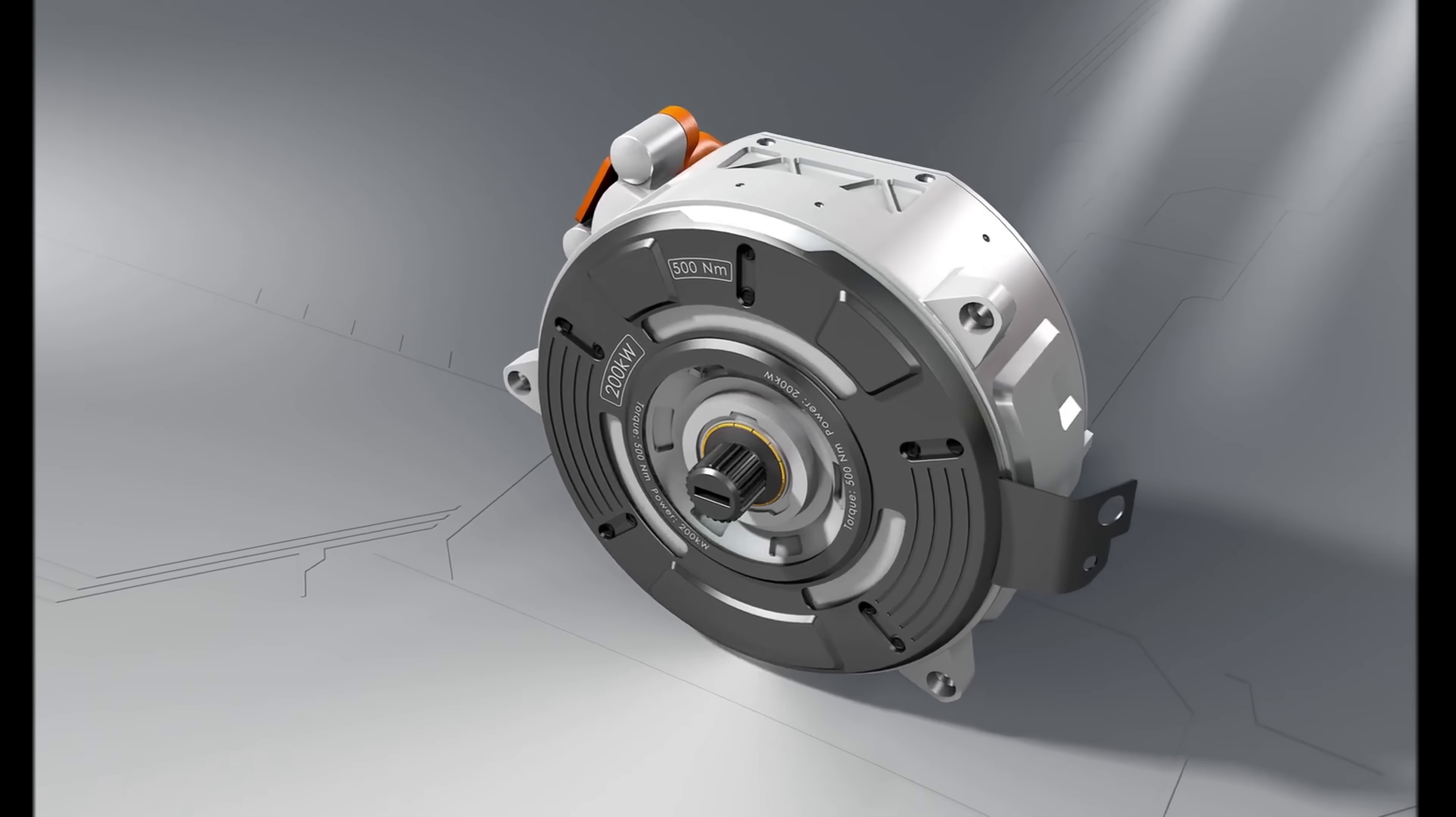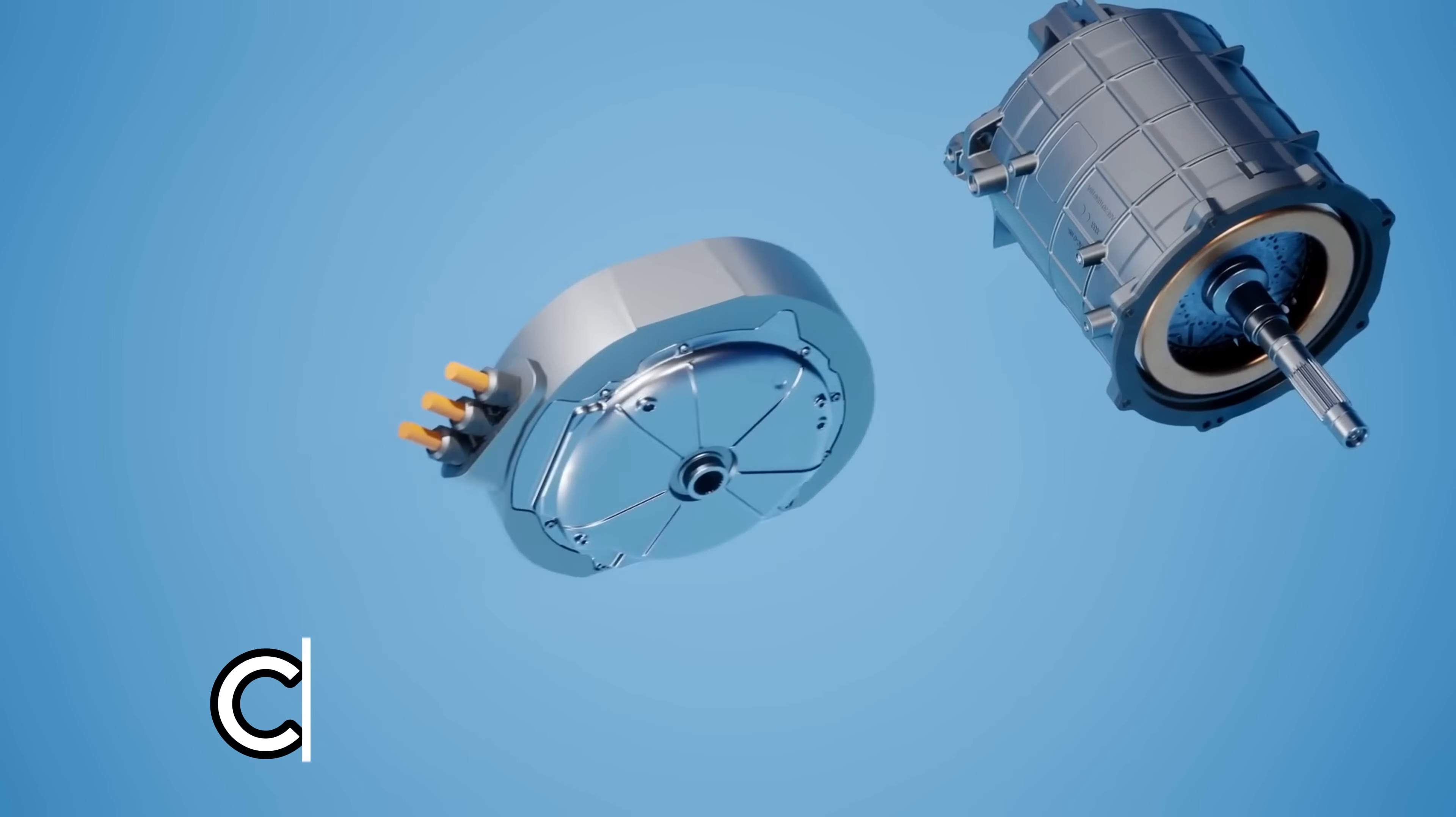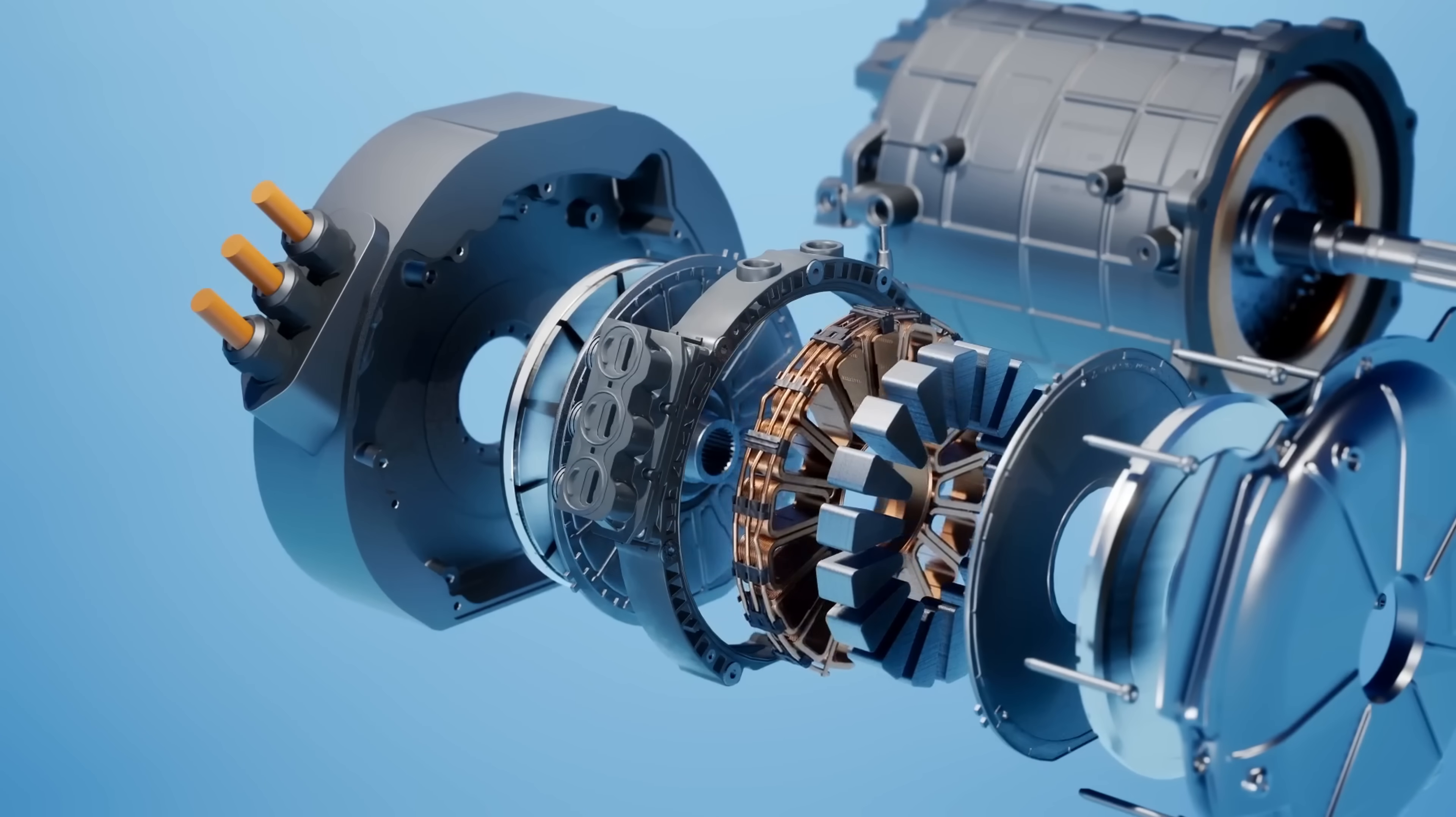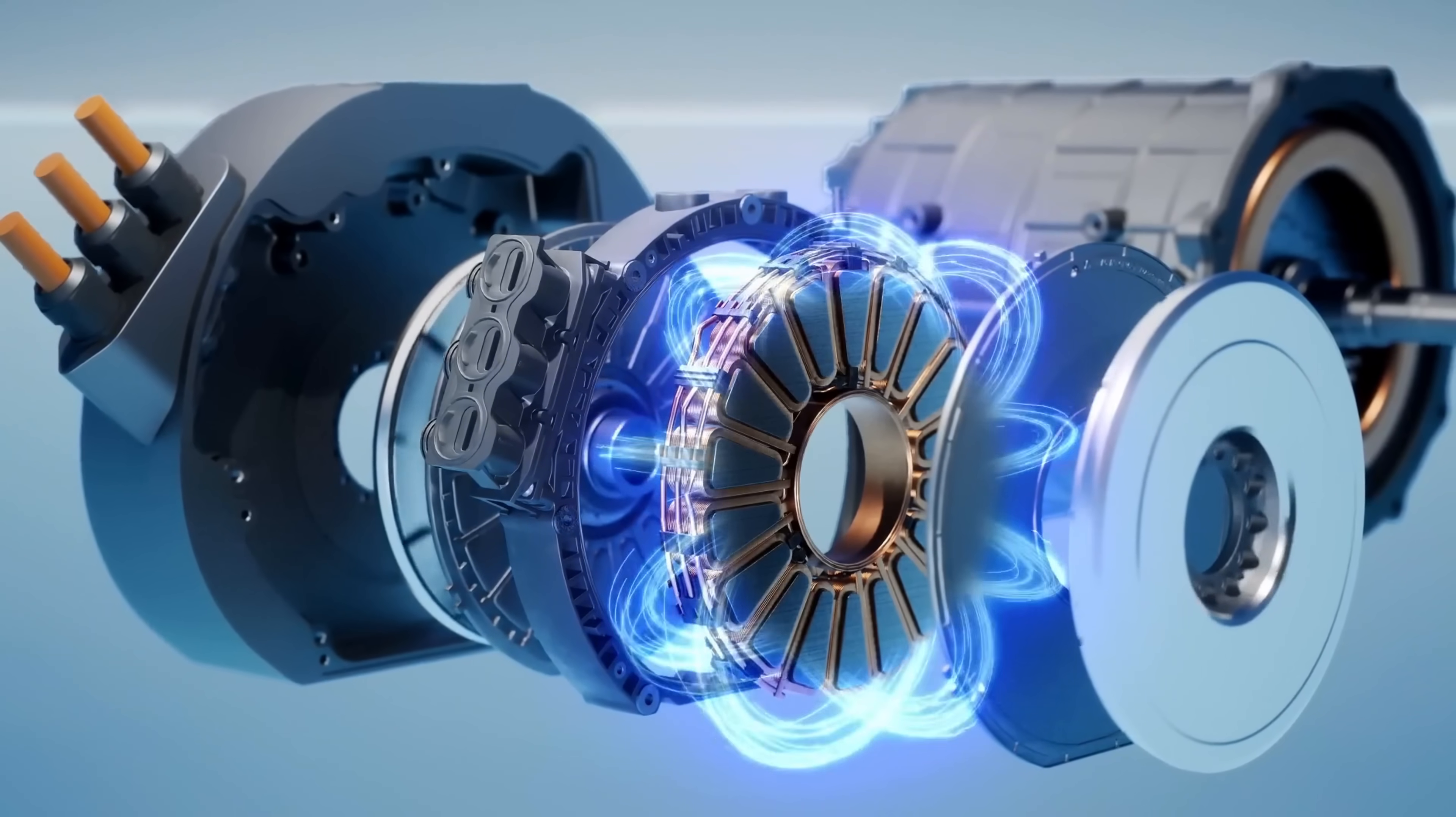The axial flux motor turns that old idea sideways. Instead of wrapping coils around a spinning cylinder, it places rotor and stator discs face-to-face. The magnetic flux travels along the axis of rotation, not across it.